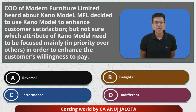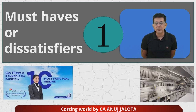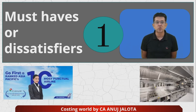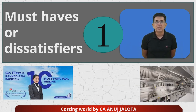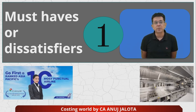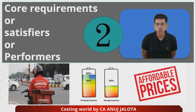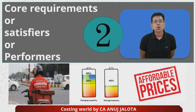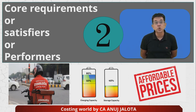Let me do a quick recap. There are five parts of the Kano model. The first is 'must-be' features — these are features your product should have. If they are not there, the consumer will be dissatisfied. Examples include punctuality for an airline or a clean kitchen. These are basic requirements.